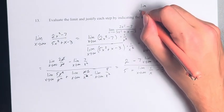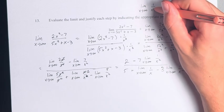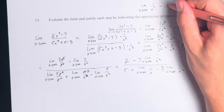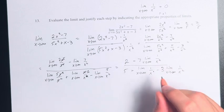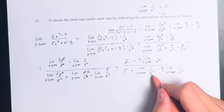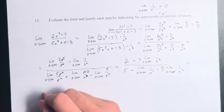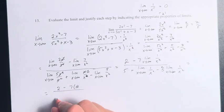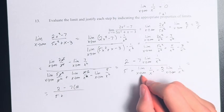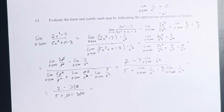Why write it this way? Because if we have the limit as x approaches infinity of 1 over x to the r, this equals 0 for any r greater than or equal to 1. Here we have r equal to 1 and r equal to 2 for all these individual examples. So this equals 2 minus 7 times 0, divided by 5 plus 0 minus 3 times 0. Basically, all those terms equal 0, leaving us with just 2 divided by 5.